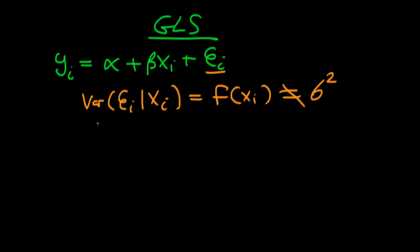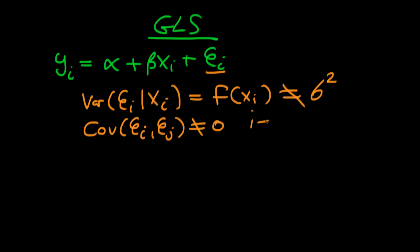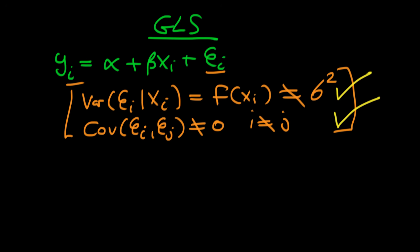Secondly, we also specify that there is some covariance structure between errors — a covariance between ei and ej which in general doesn't equal zero for some i ≠ j. Together, these two conditions say that we have heteroskedastic errors and some degree of serial correlation of errors.